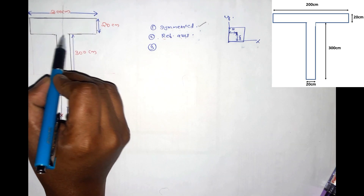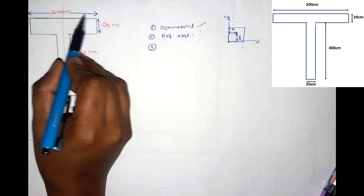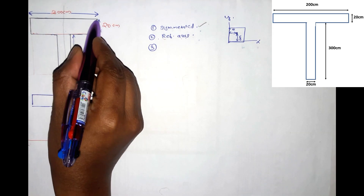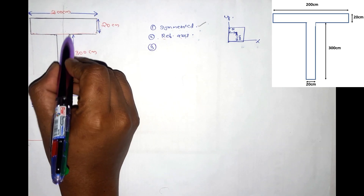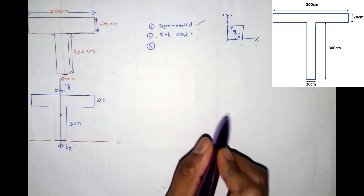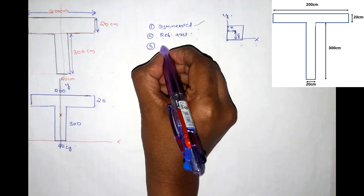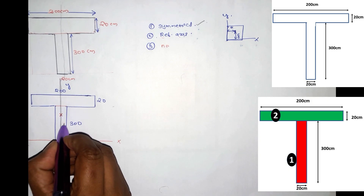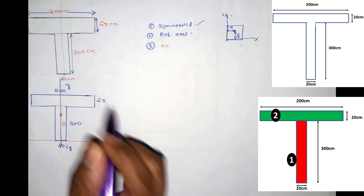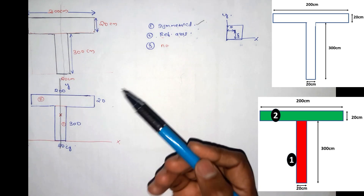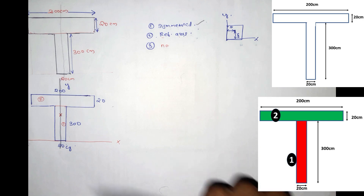If you look at the T-section, there is a T-section. We have a total here. We will mark the rectangle. The third step is for the T-section: in this channel we will mark the rectangles and convert the section into simple shapes.